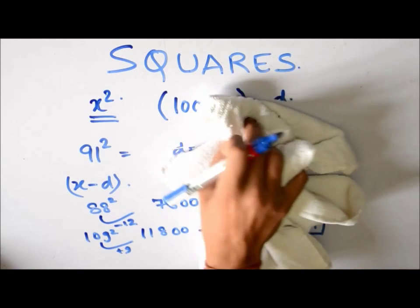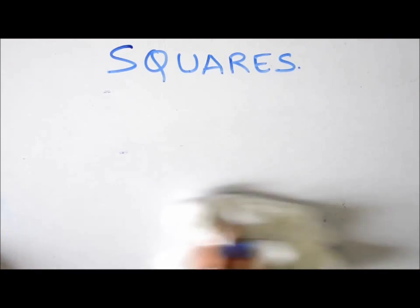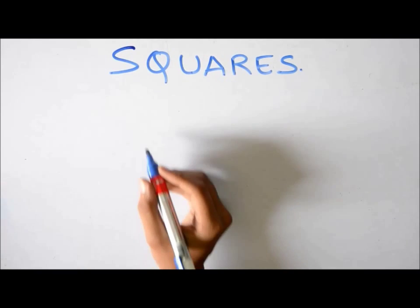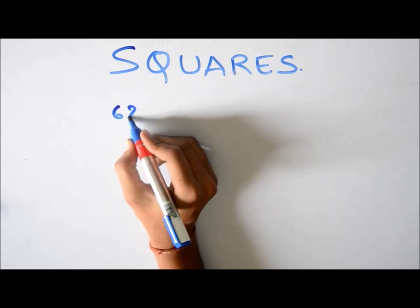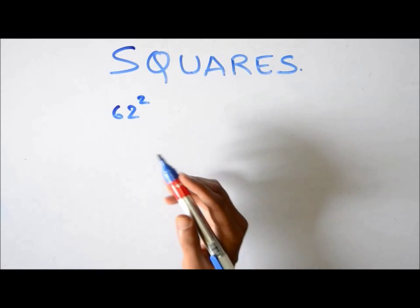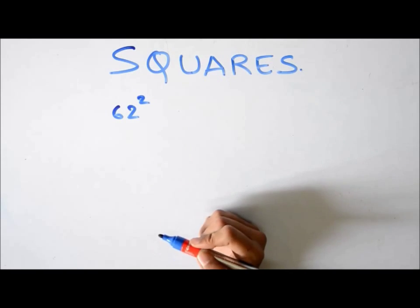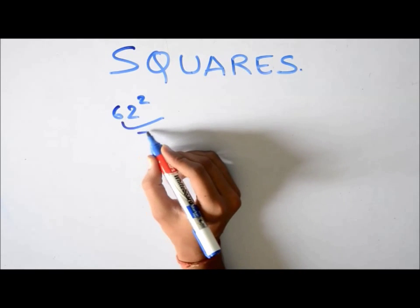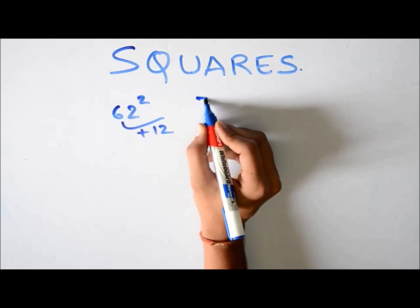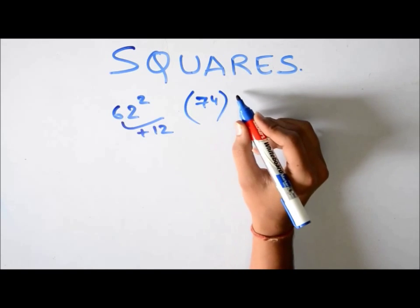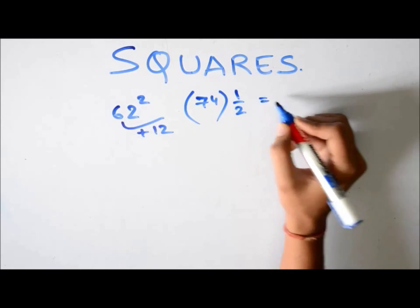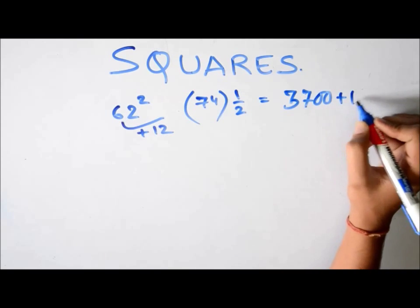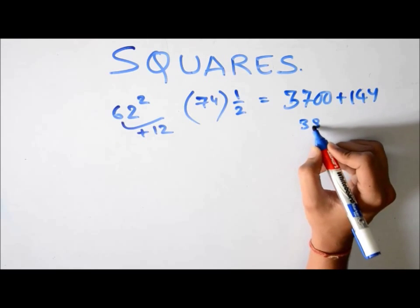Now suppose this number is not close to 100 but it's close to 50. Suppose the number is 62. You have to calculate 62 square. So now instead of taking 100 as the base, you take 50 as the base. It's 12 more than 50. So you add 12. 74. Then you do 50 by 100, that is half. That is 37. 37 again 100 and 12 square. So it is 3844.